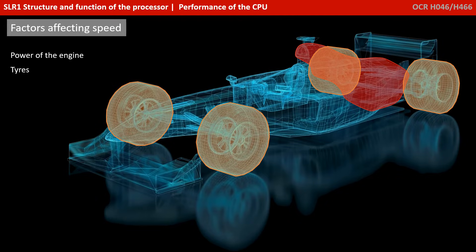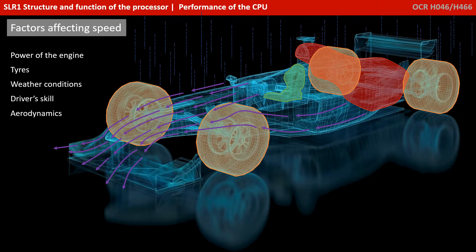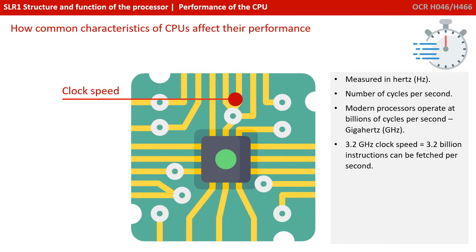What else have we got? Well, we've got the tyres, which will have a big overall impact on the speed of our racing car. We've got the weather conditions, the driver's overall skill, and the aerodynamics of the racing car. As you can see, there are lots of factors which determine the overall speed of a racing car in any particular race. In a similar way, the performance of the CPU is affected by various factors.